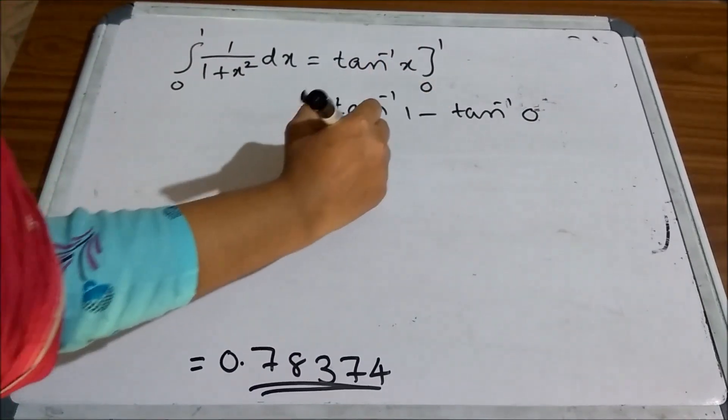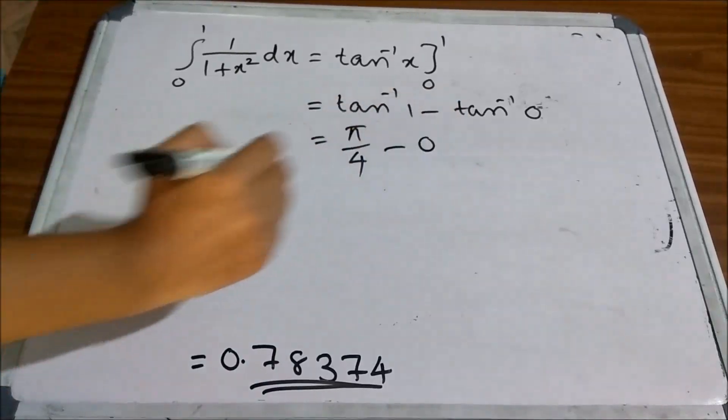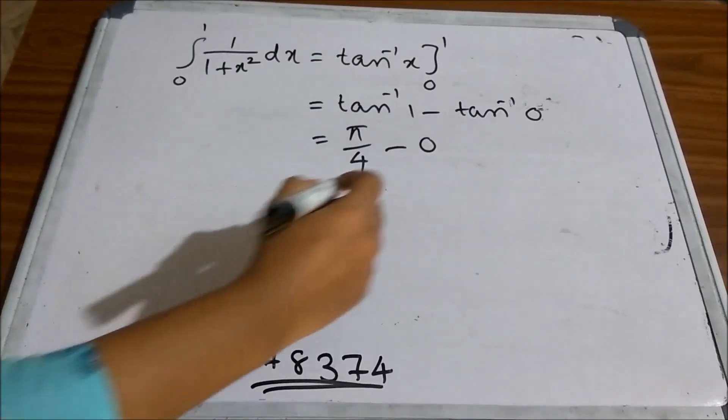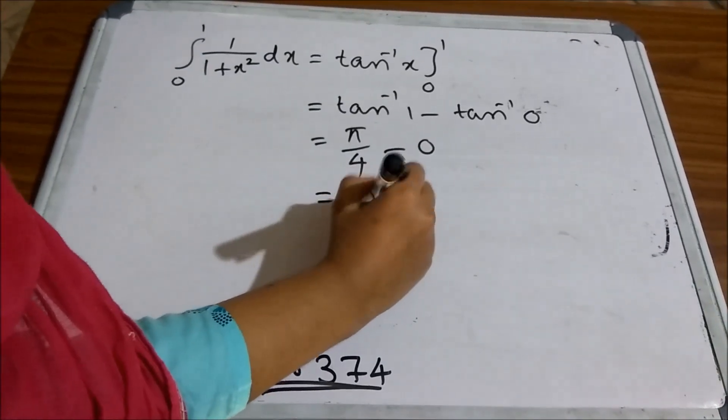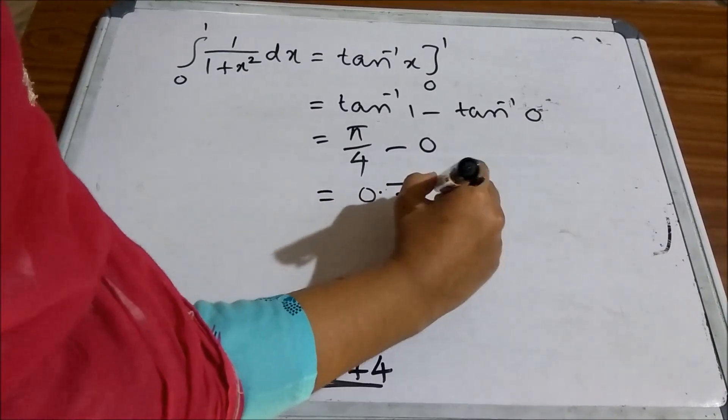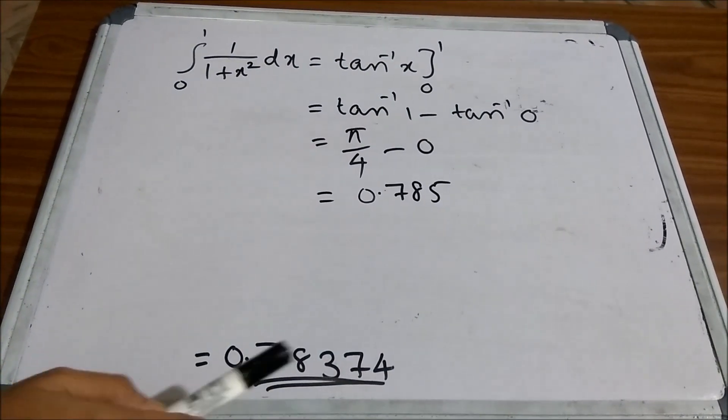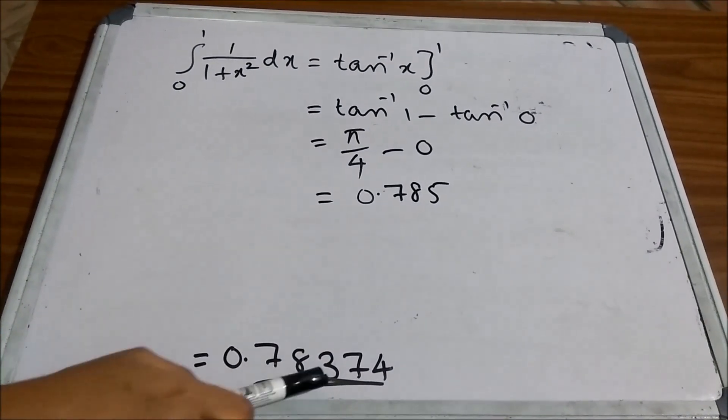you can see that it will be tan inverse 1 minus tan inverse 0. So, tan inverse 1 is pi by 4 minus tan inverse 0 is 0 and if you substitute the value of pi as 3.14, you can see that the value will be 0.785 which is approximately equal to our previous value of 0.78374.